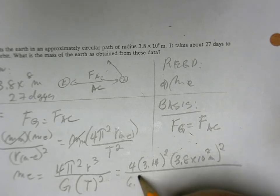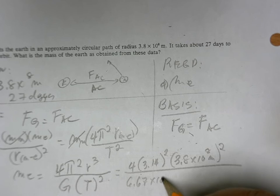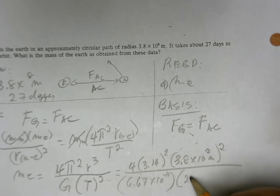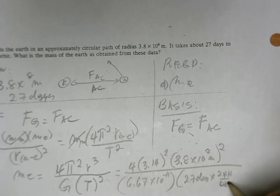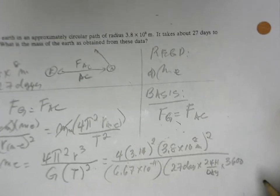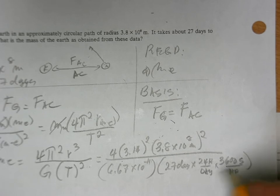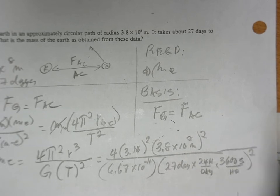G is 6.67 times 10 to the negative 11. I'm not going to bother with the units. 27 days times 24 hours per day times 3,600 seconds per hour. And that whole thing squared.